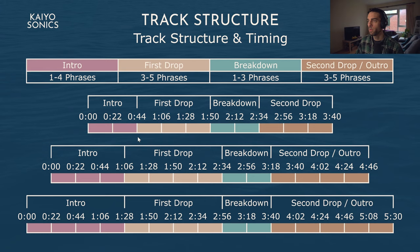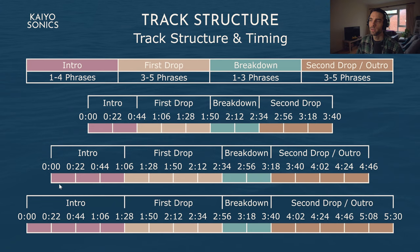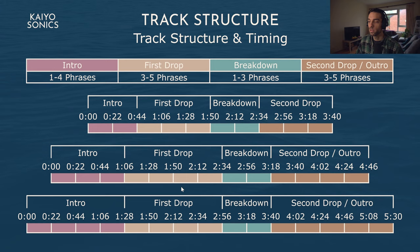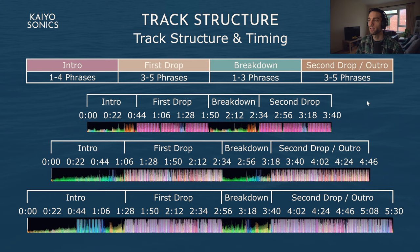These are a few examples of what a track might look like when loading it up, with the four sections labeled and the times at which each begins. In the first example there's a short two-phrase intro with the first drop starting at 44 seconds, going for three phrases before a two-phrase breakdown, then a second drop lasting three phrases. The bottom two examples are similar, differing mainly in intro length — three phrases in the middle example and four in the bottom — and the second drop is five phrases long in the bottom example versus four in the middle, with first drops and breakdowns being the same length.